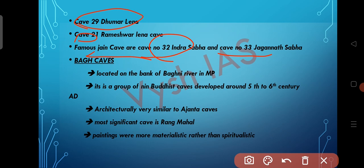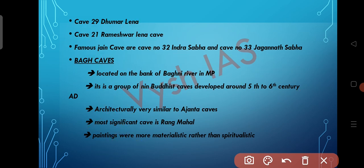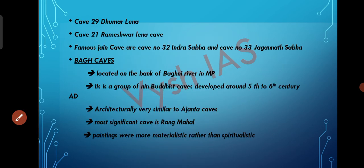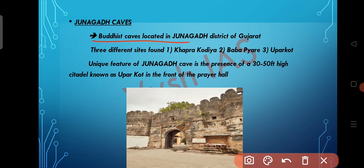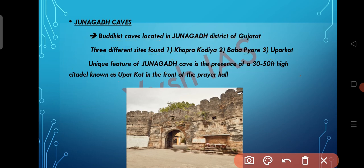Now let's see about the Baag caves. This cave is located on the banks of River Baghni in Madhya Pradesh — a group of nine Buddhist caves developed around the 5th to 6th century AD, architecturally very similar to Ajanta. The most significant cave is Rang Mahal. The paintings here are more materialistic rather than spiritualistic. Now let's see about Junagarh caves. The Buddhist caves are located in Junagarh district of Gujarat and have three different sites — Khapra Kodiya, Baba Pyara, and Uparkot. Uparkot is a citadel, and the unique feature of Junagarh caves is the presence of a 30 to 50 feet high citadel known as Uparkot in front of the prayer hall.